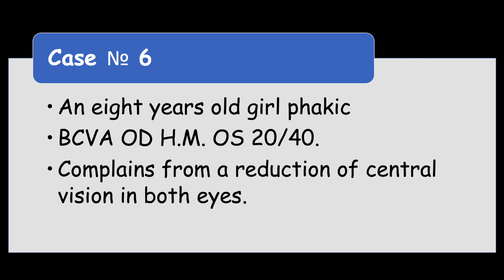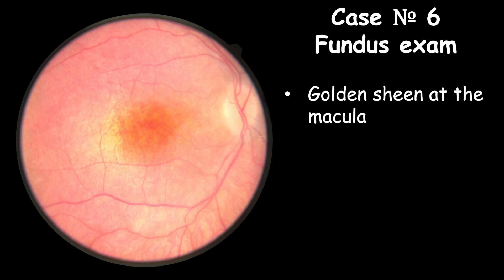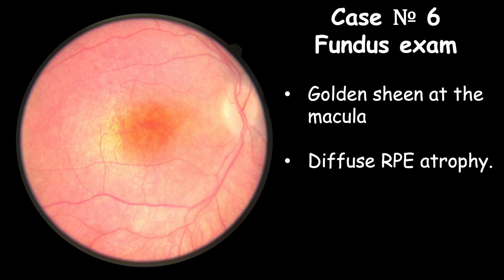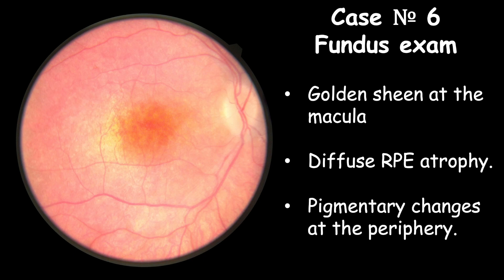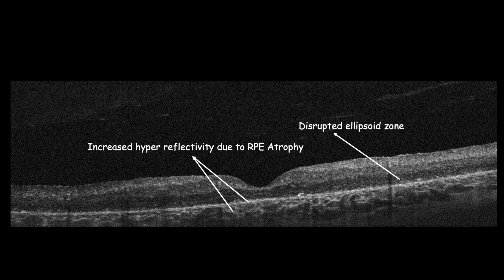The next case: best-corrected visual acuity in the right eye is hand motion and 20/40 in the left eye. The patient complains of reduction of central vision in both eyes. Fundus exam shows a golden sheen of the macula with diffuse RPE atrophy and pigmentary changes at the periphery. OCT scan shows diffuse ellipsoid zone disruption and RPE atrophy, inducing increased reflectivity of the choroid. Although the fovea appears with normal contours, the boundaries between retinal layers are not clear.